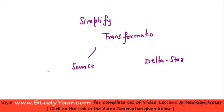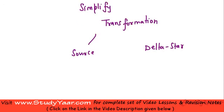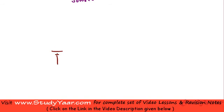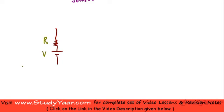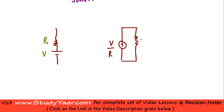Let's look at what is happening in source transformation. Let's say you have a voltage source which is connected in series with a resistance. Anywhere you see this type of circuit or this type of part in a circuit, if the voltage is V and the resistance is R, then it can be replaced with a current source having a current V upon R which is in parallel with a resistance of value R.